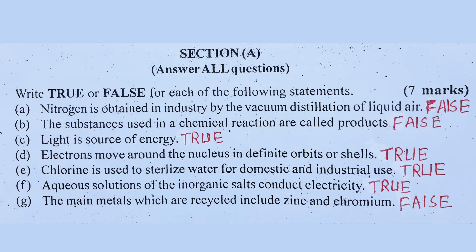Number 1, True or False. Number 8: Nitrogen is obtained in industry by the fractional distillation of liquid air. Liquid air is a fractional distillation of nitrogen and phosphorus. Phosphorus is a medicinal distillation of liquid air.